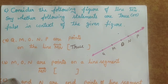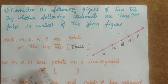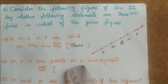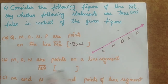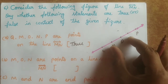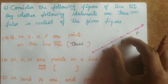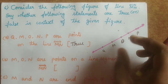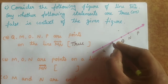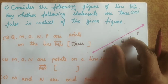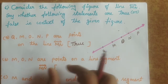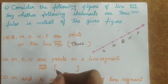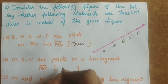Statement B: M, O, N are points on line segment MN. So MN is the line segment, and M, O, N are all points on that line segment — this statement is also true.